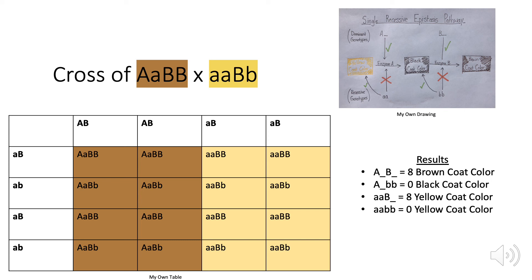As you will notice, only two phenotypes arise from this cross, brown coat color and yellow coat color. This is due to the fact that eight of the 16 offspring have a recessive allele at the first locus, causing a stop to the pathway and the resulting yellow coat color phenotype. The other eight offspring have dominant alleles present at both loci, causing both enzymes to be produced and yielding a brown coat color phenotype. This leaves us with a phenotypic ratio of one to one.